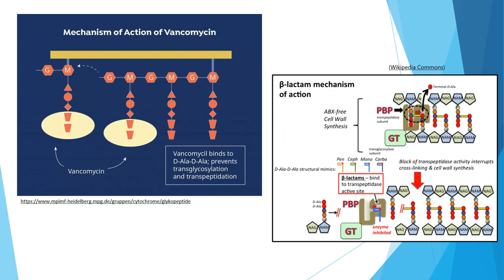So two antibiotics work on the cell wall: vancomycin and beta-lactam antibiotics. Beta-lactam antibiotics bind to the transpeptidase — also called the penicillin binding protein — at its active site, inhibiting cross-linking and cell wall synthesis. Vancomycin binds to the D-alanine–D-alanine subunit, and once bound, it inhibits transglycosylation and transpeptidization between subunits and prevents addition of new subunits.